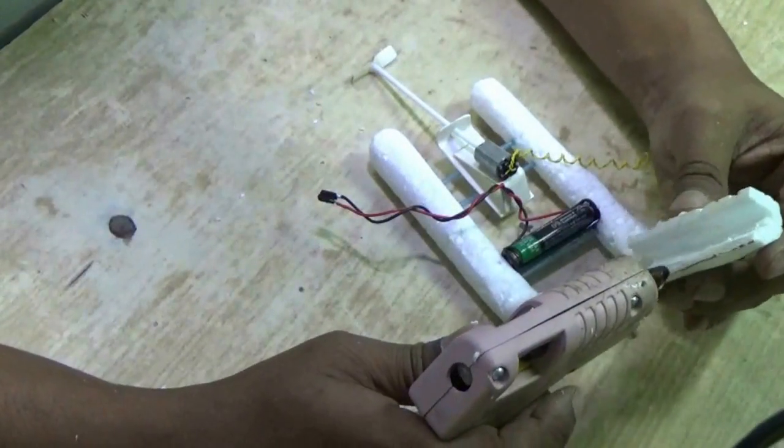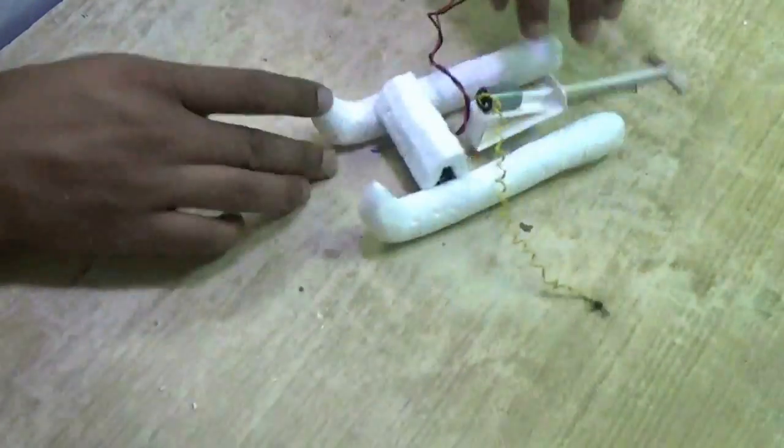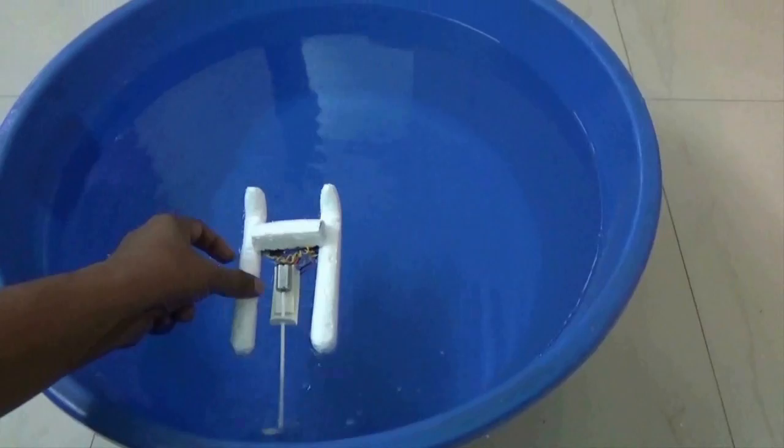This is one small square piece on top of the battery. Glue it on top. This is just to hide the battery.